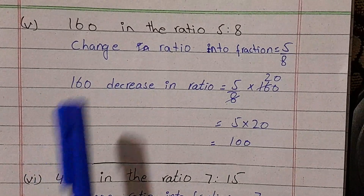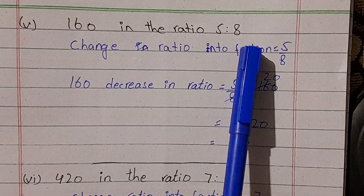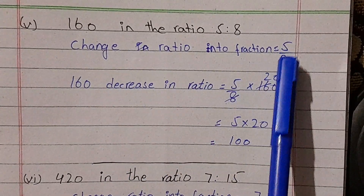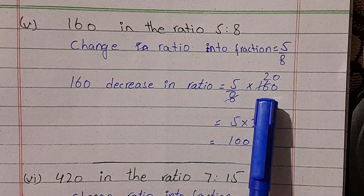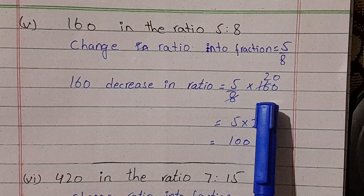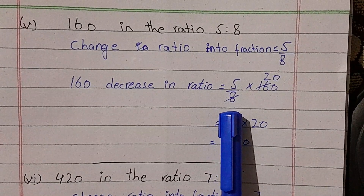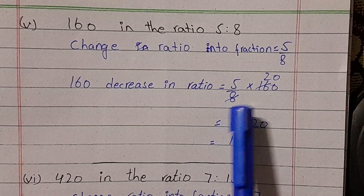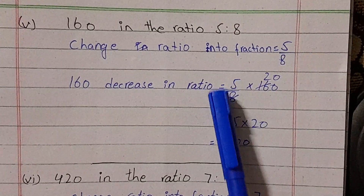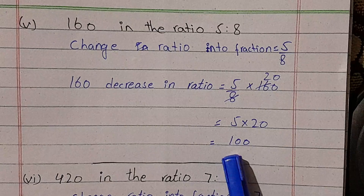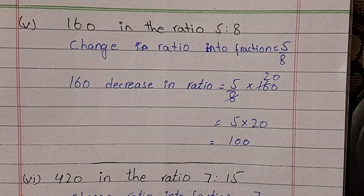Part number 5: decrease 160 in the ratio of 5 to 8. We write the ratio as a fraction: 5 over 8. We multiply 5 over 8 by 160. We divide 160 by 8, which gives 20, then multiply by 5, giving us 100. So the answer is 100.